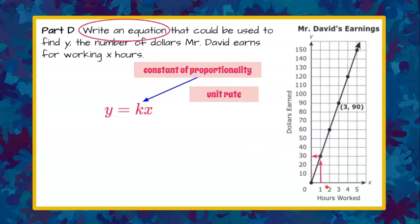So when he works one hour he makes $30. That's our constant of proportionality. We replace k in our equation with that value of 30, and our equation that represents this relationship is y equals 30x.